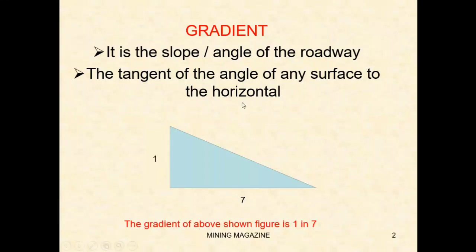For example, consider a 1 in 7 gradient. Here, 7 is the horizontal roadway distance driven, meaning for every 7 meters driven horizontally, there is 1 meter of vertical displacement. That is what a 1 in 7 gradient means.